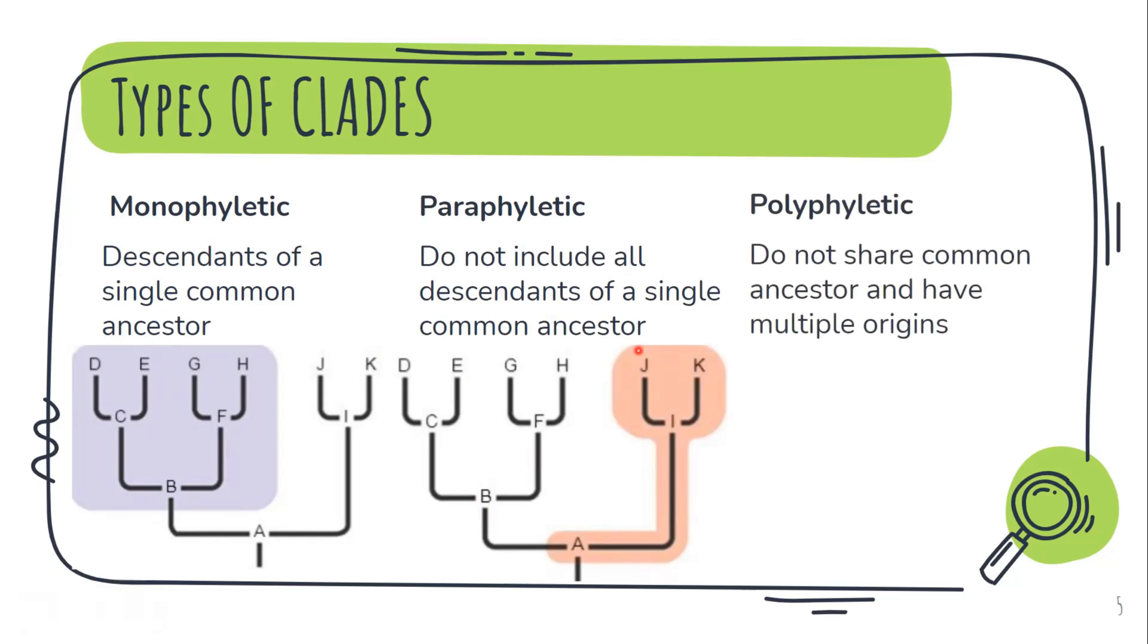Next polyphyletic. They do not share any common ancestor and have multiple origins. For example right here. This GH taxons are not related to JK. They have evolved independently. That is they have different origins. So this is an example of polyphyletic.